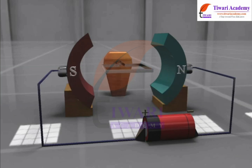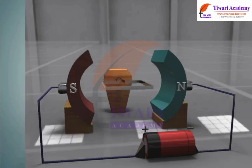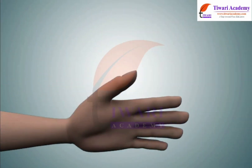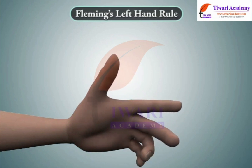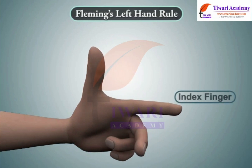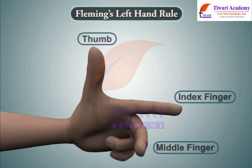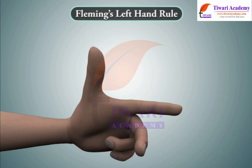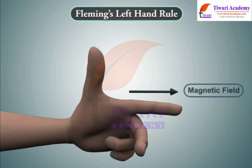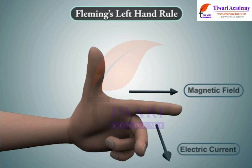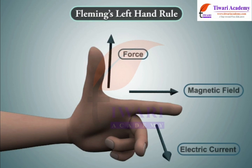The direction of rotation of this motor is given by Fleming's Left Hand Rule, which states that if the index finger, middle finger, and thumb of your left hand are extended mutually perpendicular to each other, and if the index finger represents the direction of magnetic field and the middle finger indicates the direction of electric current, then the thumb represents the direction in which force is experienced by the shaft of the motor.